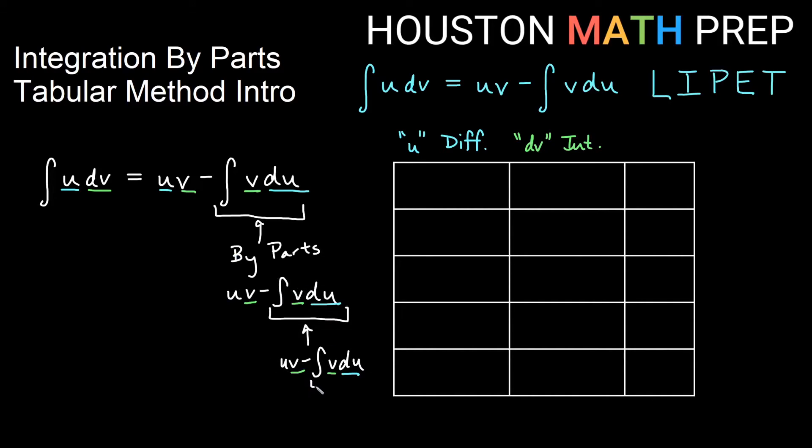So each time I might have an integral if I do it multiple times, the idea is that you would need to distribute this minus into all of this here. And then you would need to distribute another minus again into all of this stuff here. So the idea is that each row, we're going to be distributing a minus.